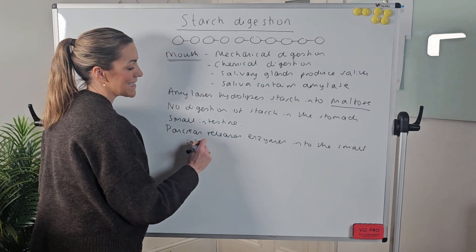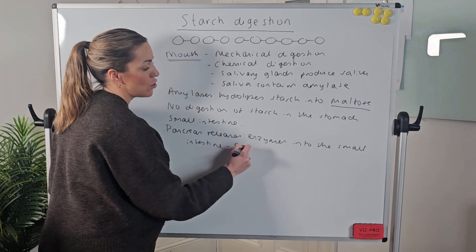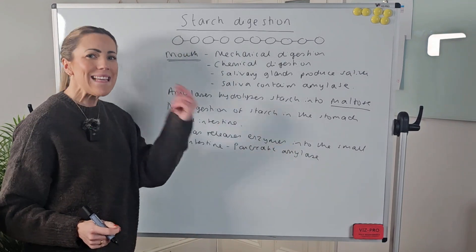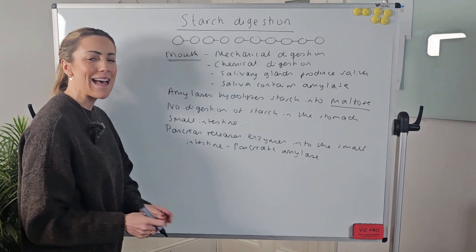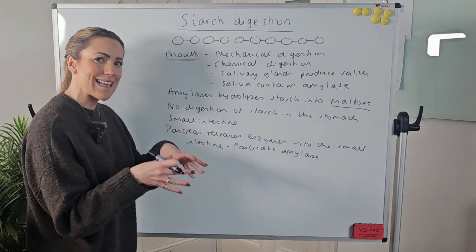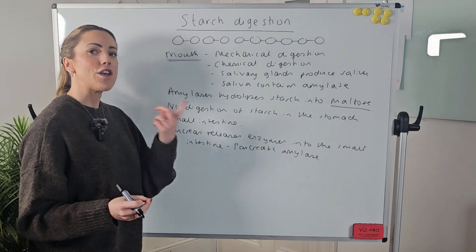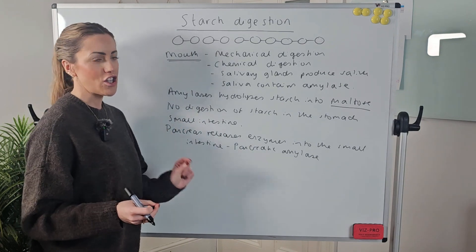And again, it's amylase. This time we could call it pancreatic amylase. The food doesn't go into the pancreas, just to be clear. The pancreas is releasing the pancreatic amylase into the small intestine, so further digestion of starch can occur.